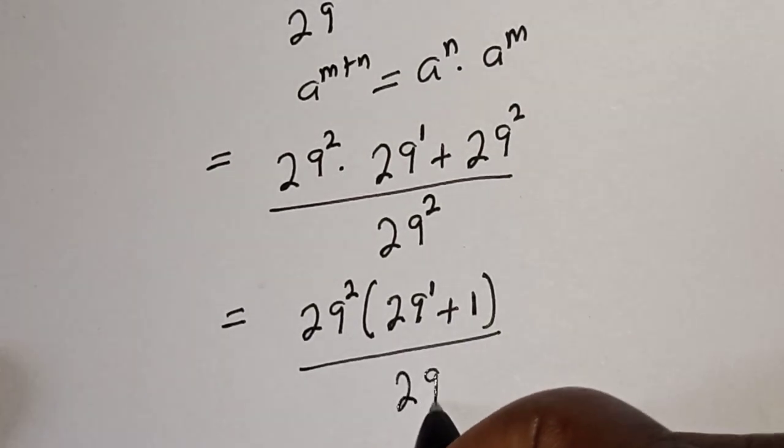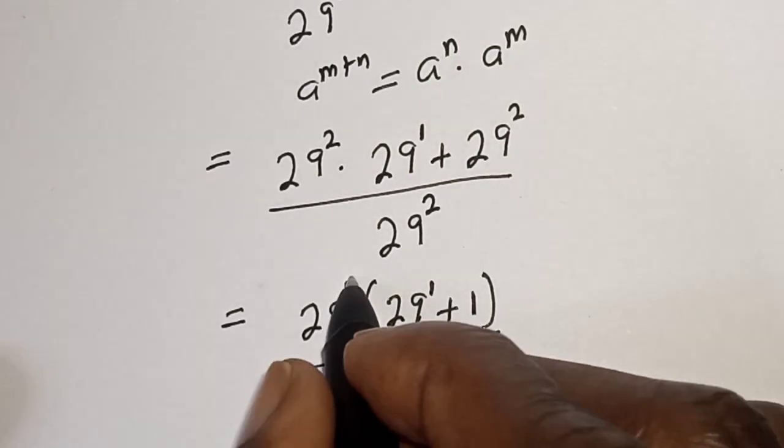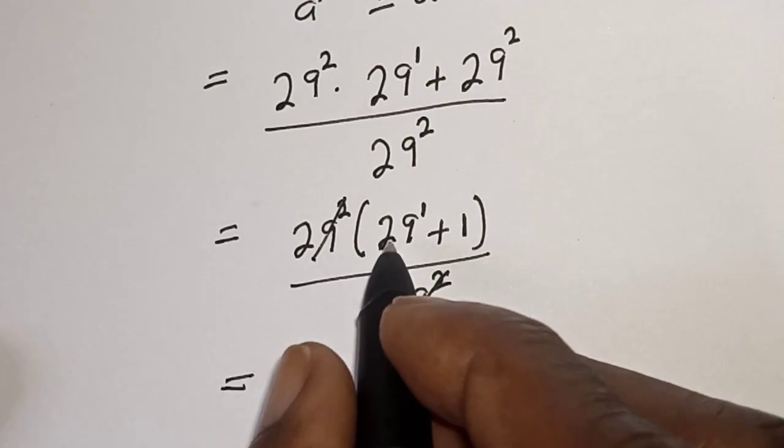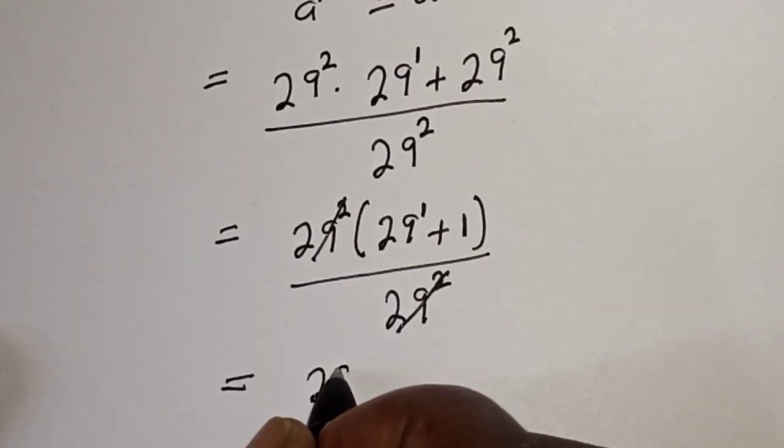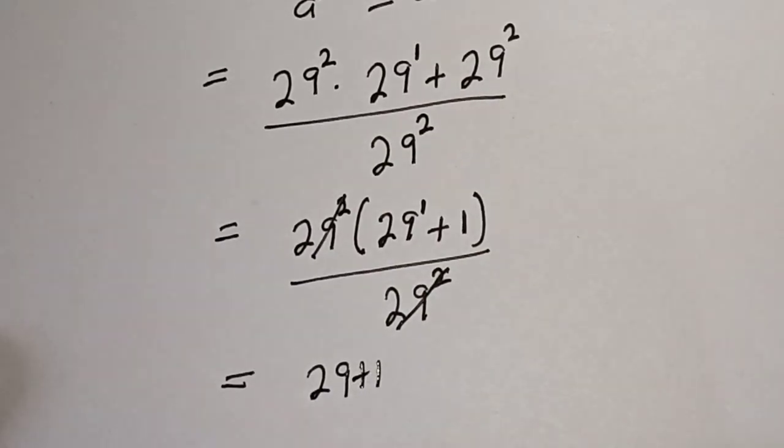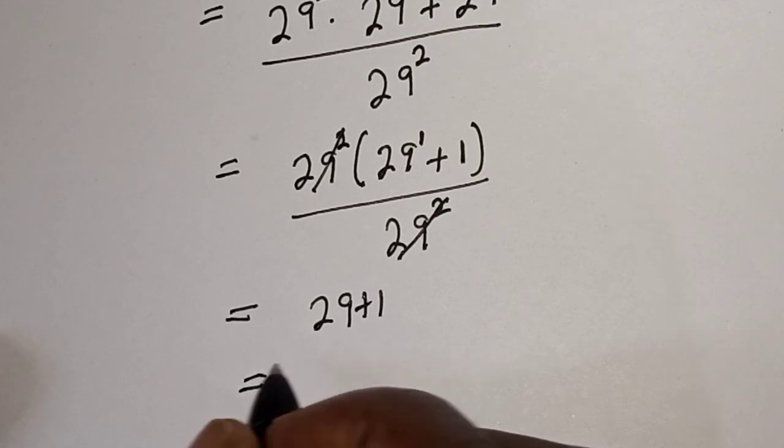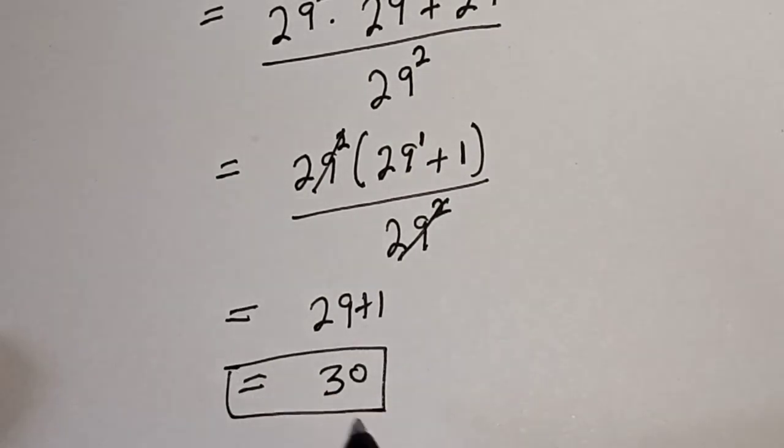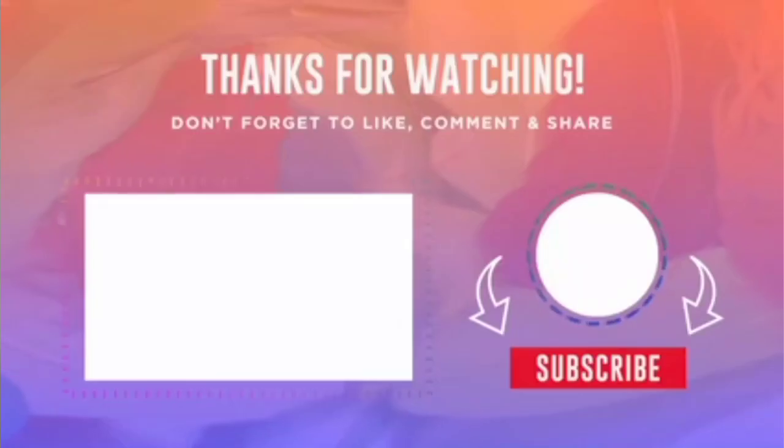This will cancel. Then this is equal to 29 raised to power 1, which is 29, plus 1, and 29 plus 1 is equal to 30. That is our final answer. If you enjoyed the class, please don't forget to like, share, comment and subscribe. Thank you.